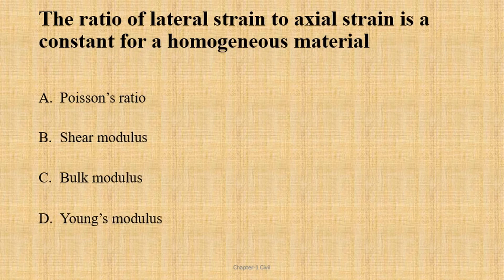The ratio of lateral strain to axial strain is a constant for a homogeneous material. Poisson's ratio is the direct definition: lateral strain divided by longitudinal strain. The answer is Poisson's ratio.